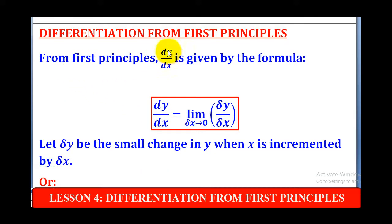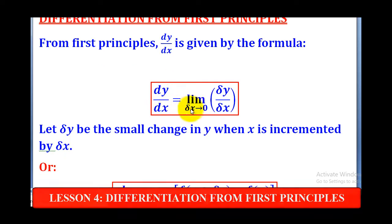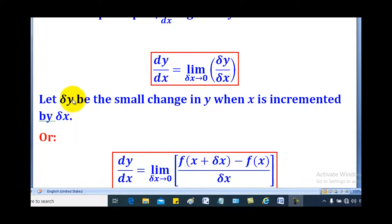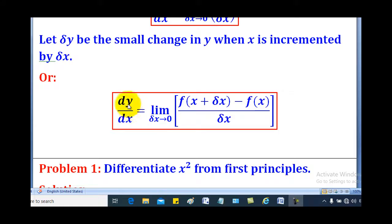From First Principles, dy/dx is given by the formula: dy/dx equals the limit as the small change in x tends to 0, of small change in y over small change in x. Alternatively, dy/dx can also be given by the formula: limit as small change in x tends to 0, of f(x + δx) minus f(x), all over small change in x.